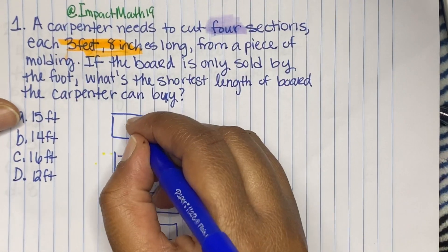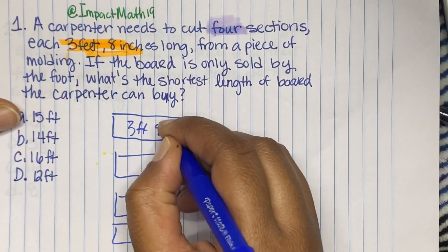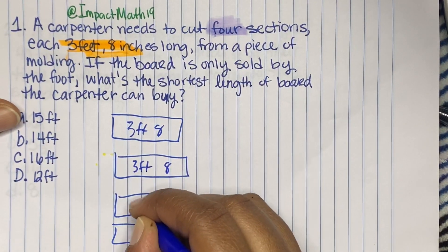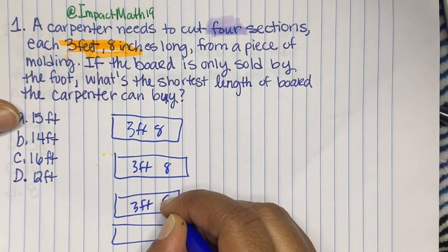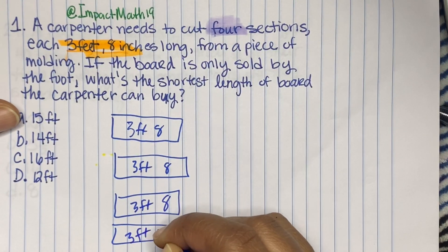Then what we're going to do is we're going to put three feet eight, three feet eight, three feet eight, three feet eight.